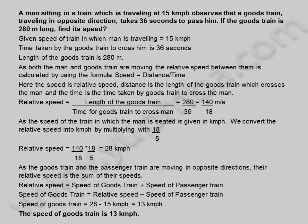The speed of goods train is 13 kilometers per hour. Let us see another example.